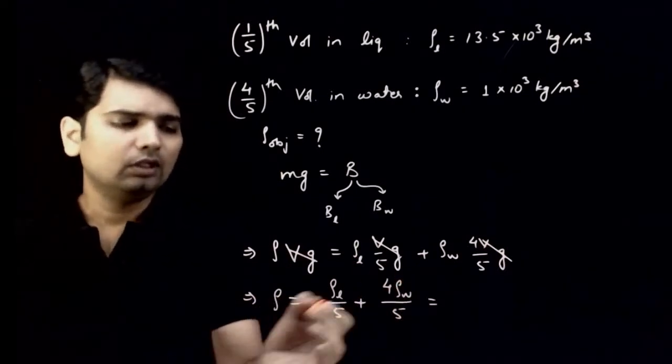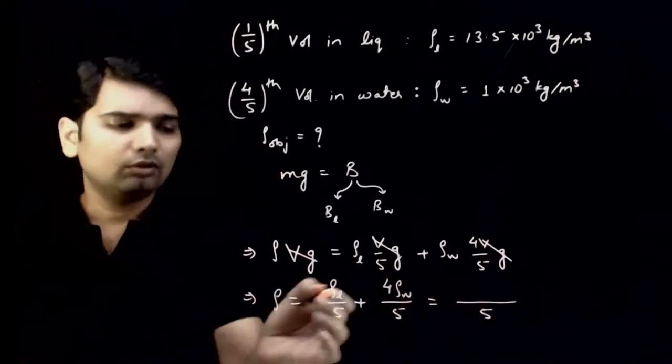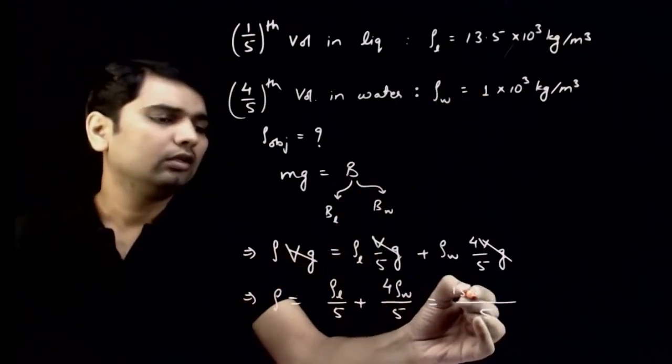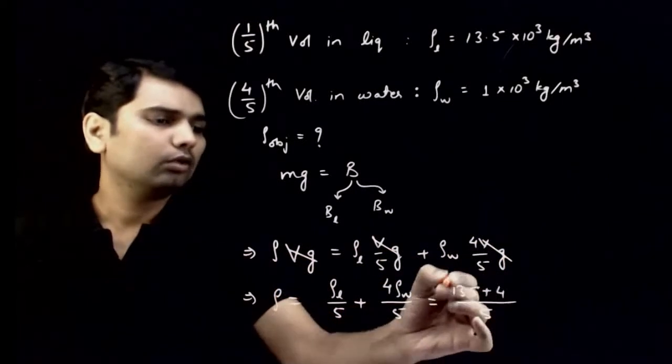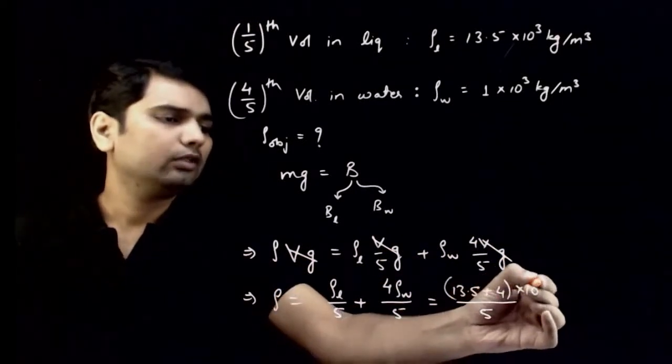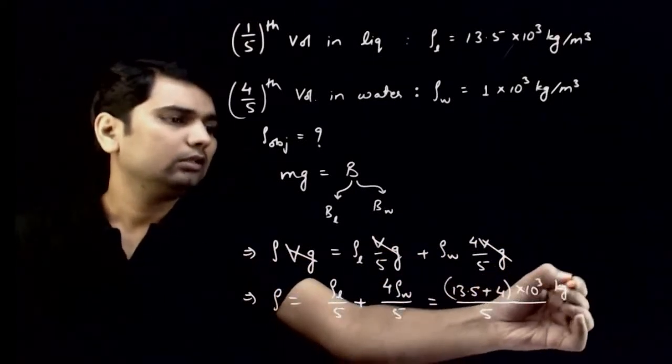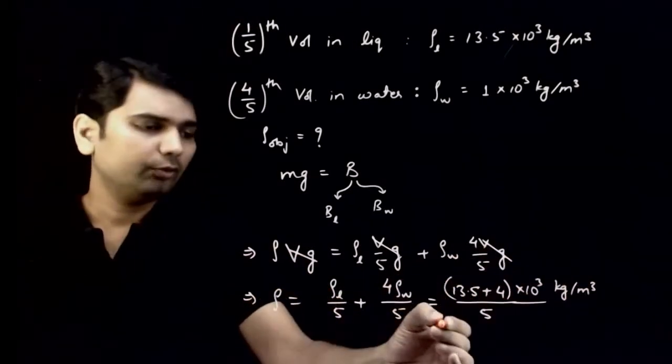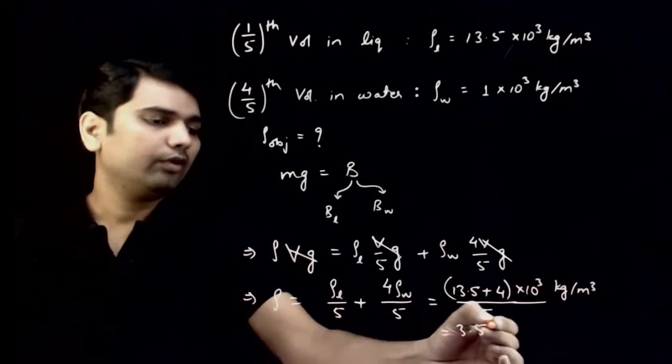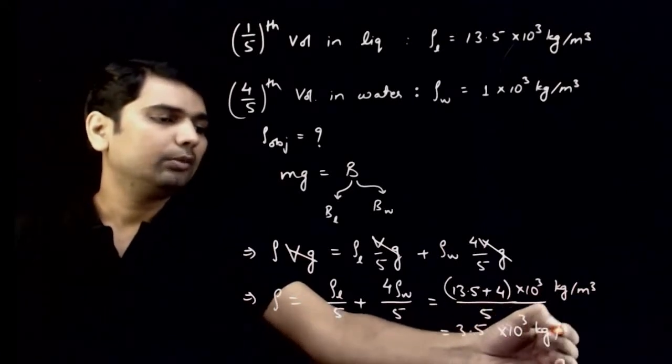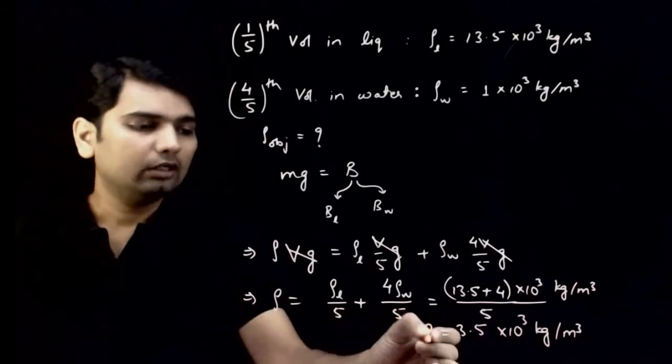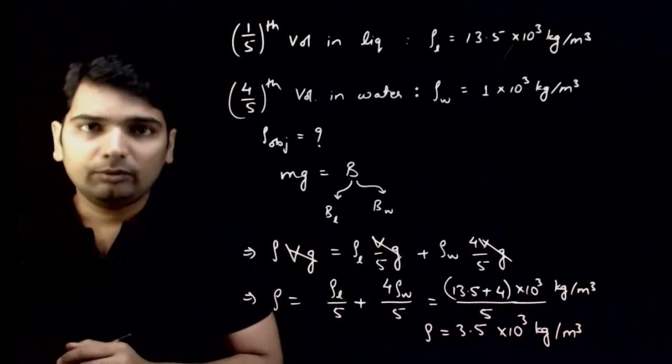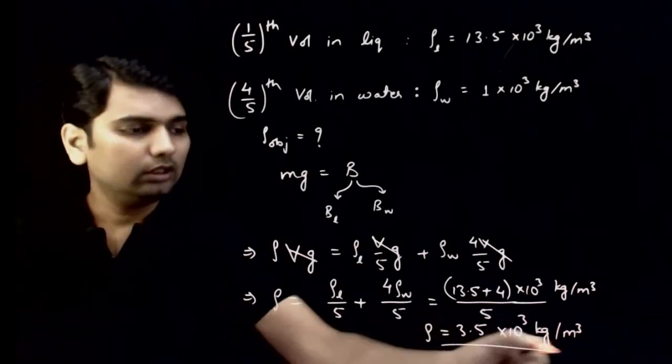Which is equal to ρ liquid, density of liquid 13.5 plus 4 times ρ water means 4 into 10³ kg per meter cube. This is your density, this is your object density: 3.5 × 10³ kg per meter cube. This is your answer.